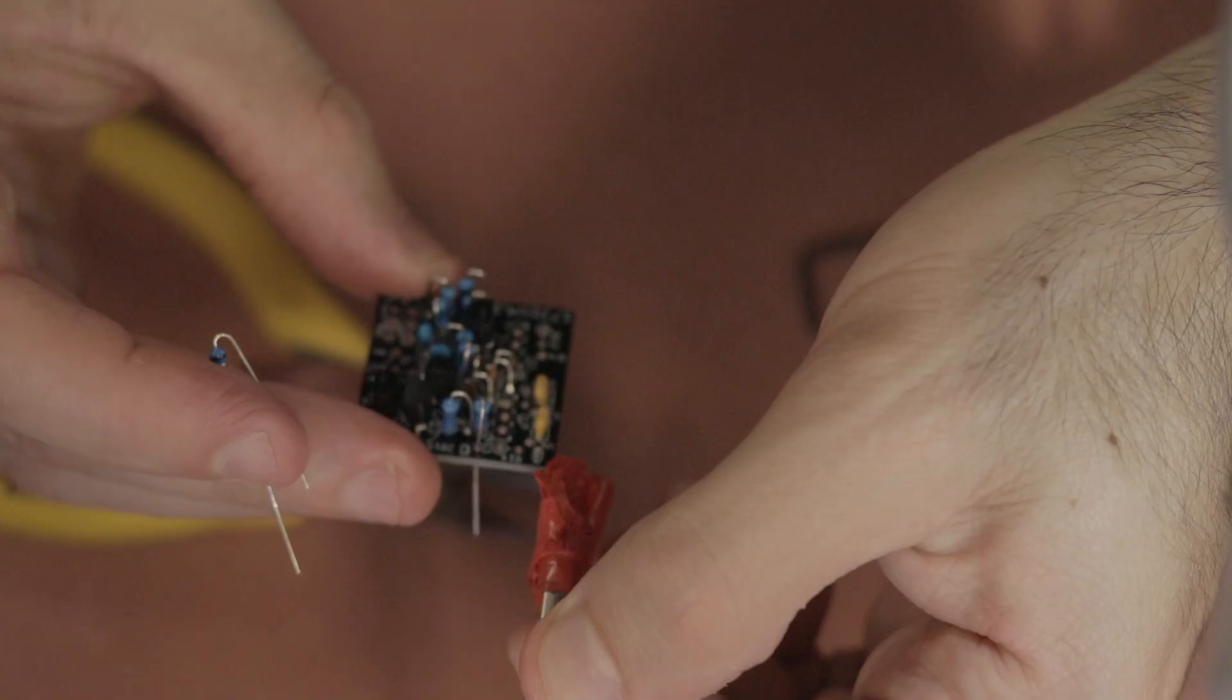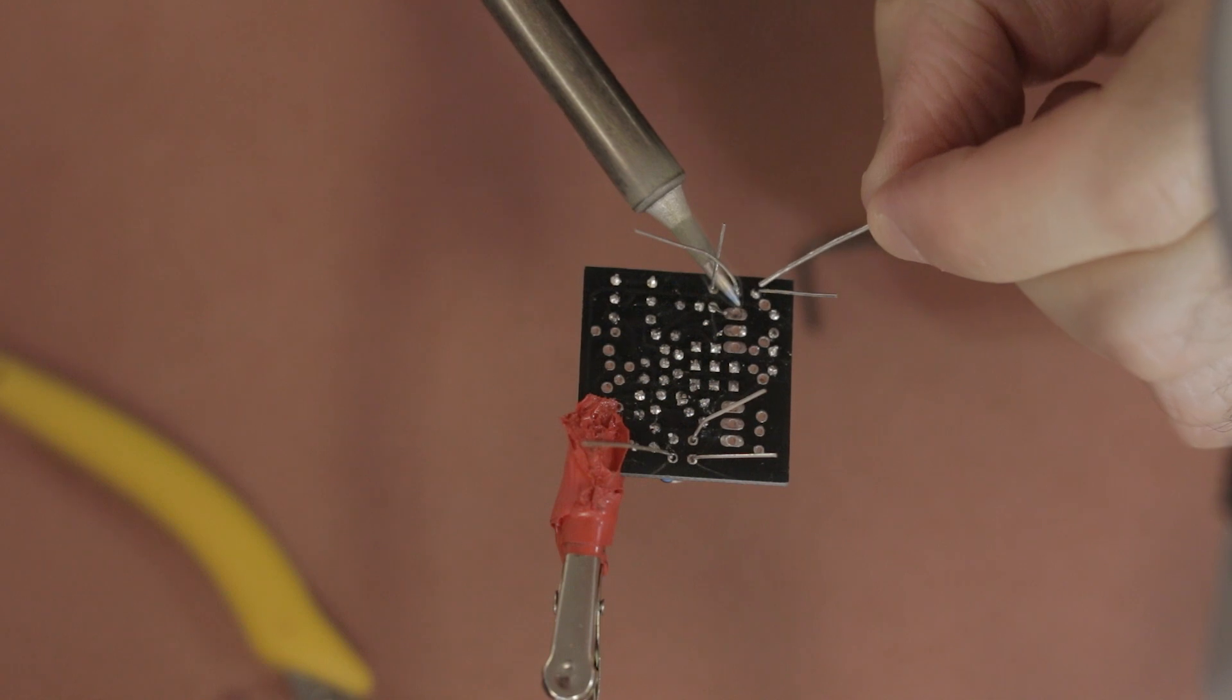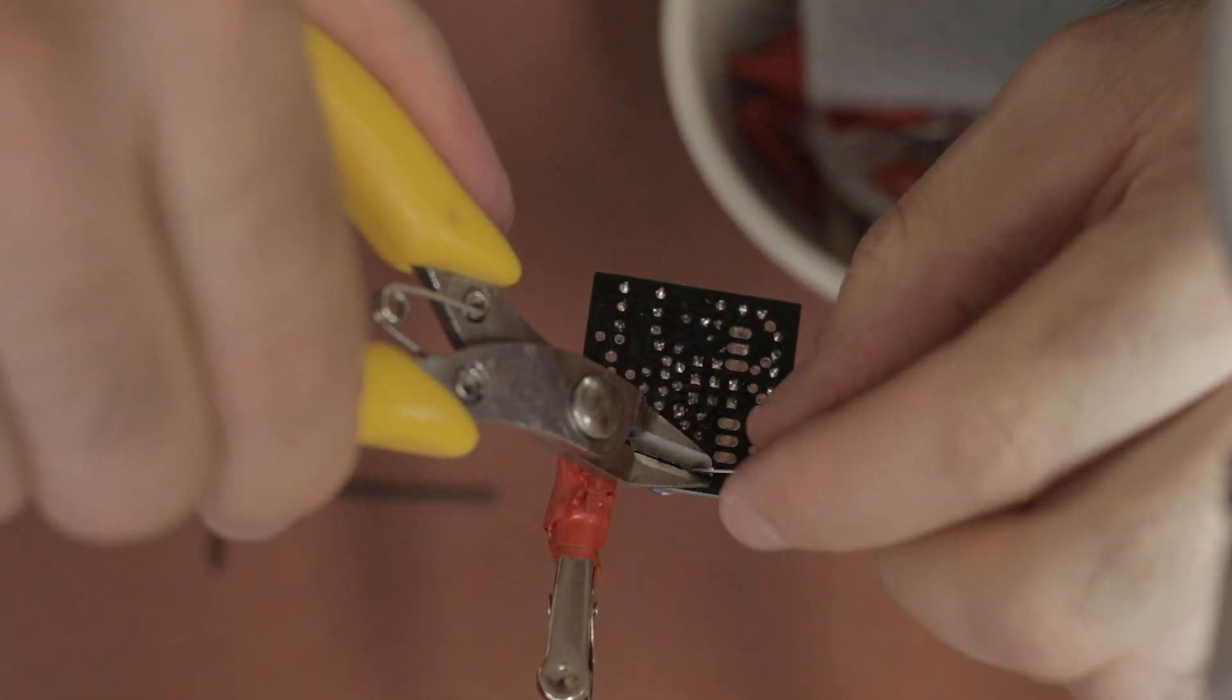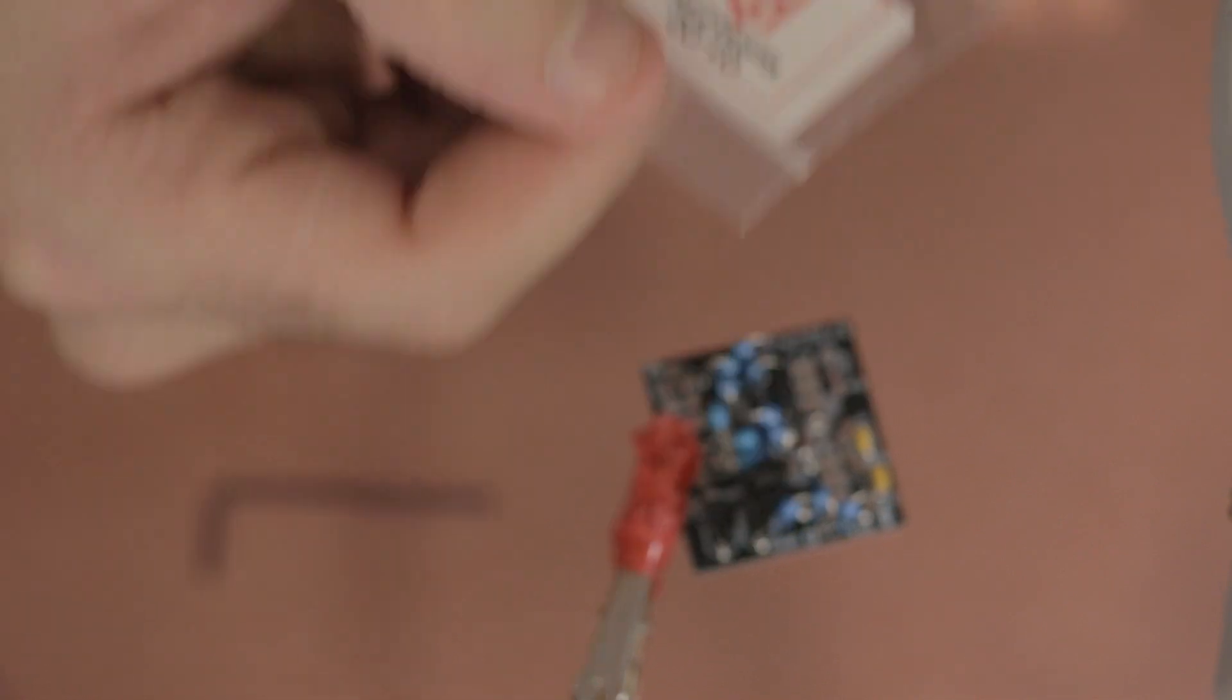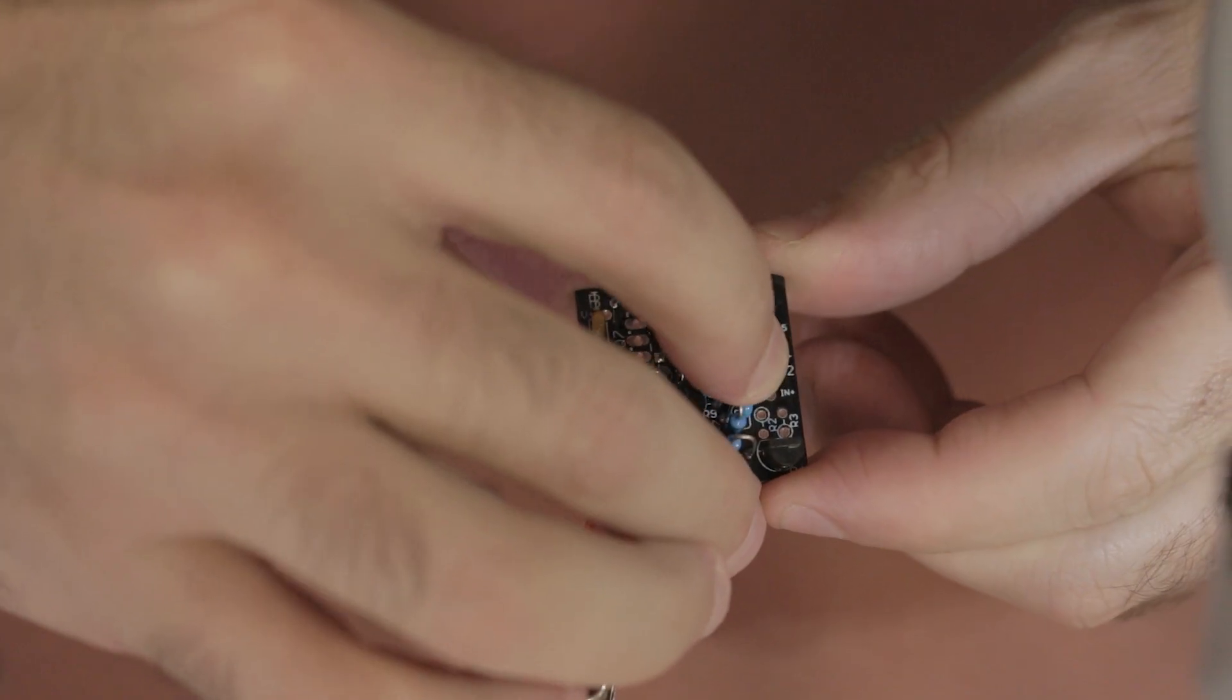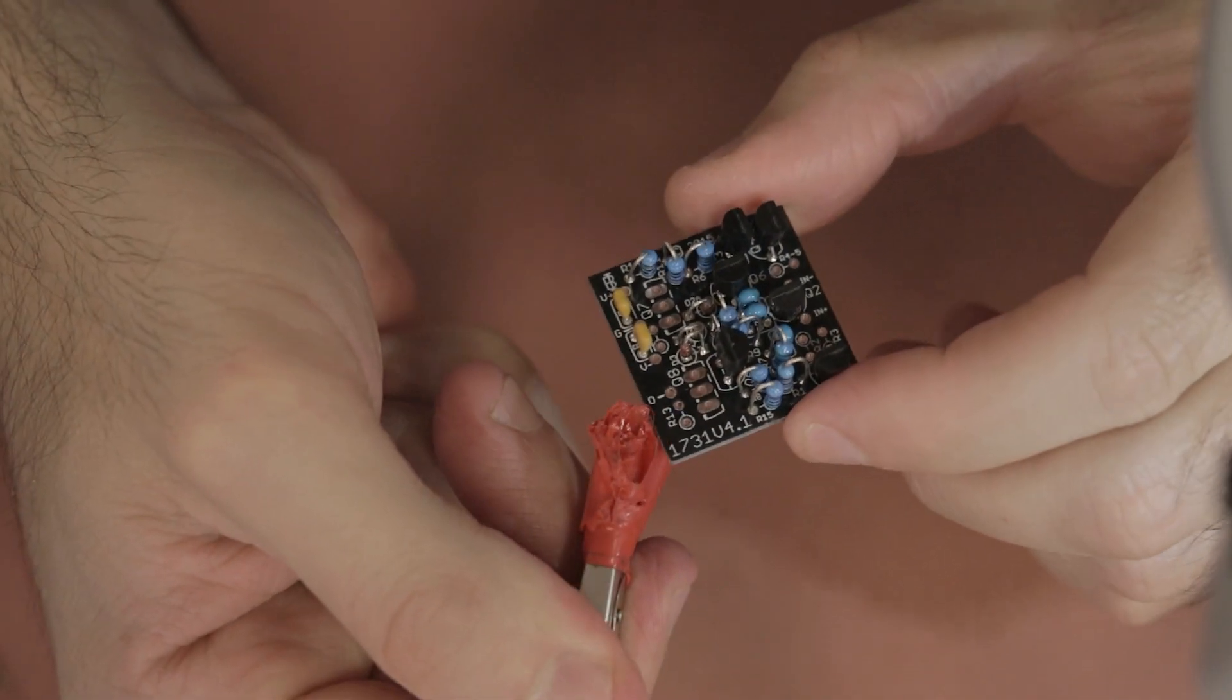And then you want to do the same again for R8, R11, R14, and R15. And then solder those in place. And then you want to remove the two transistors from the small matched pair bag called Q1 and Q2. And then solder them in place.